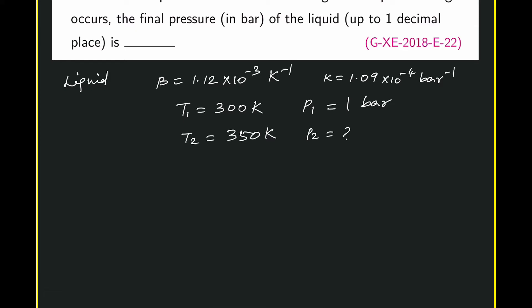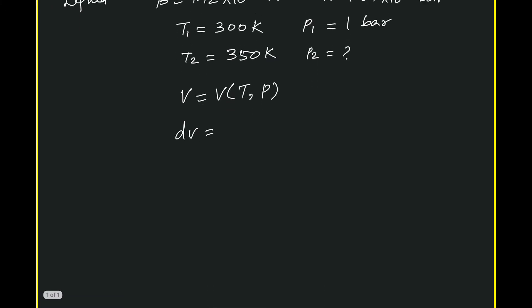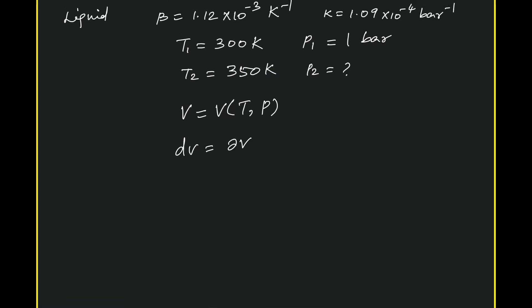We know for a single component system the volume, pressure, and temperature are related. Volume is a function of temperature and pressure. Let us differentiate this, which is dV = (∂V/∂T)_P dT + (∂V/∂P)_T dP.